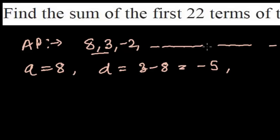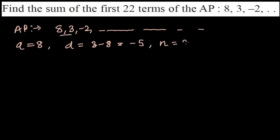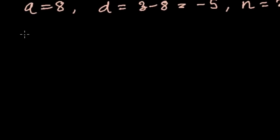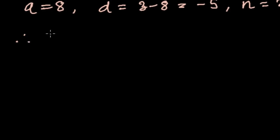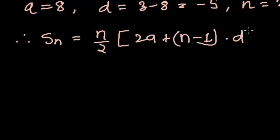So sum of n terms is now equals to the formula is n by 2, 2a plus (n minus 1) times d. This is our sum of n terms formula so I am just applying all of this information.